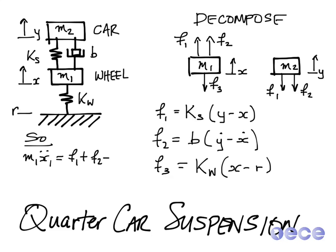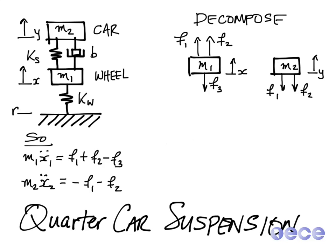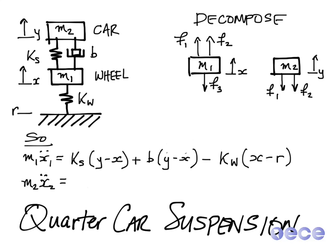now we can write that M1 X1 double dot is F1 plus F2 minus F3. And likewise, M2 X2 double dot is going to be equal to minus F1 minus F2. So we can substitute in those values for the actual forces to get something that's going to be our equations of motion.